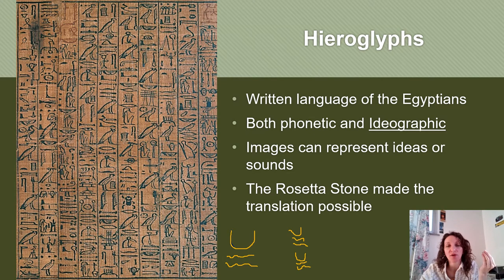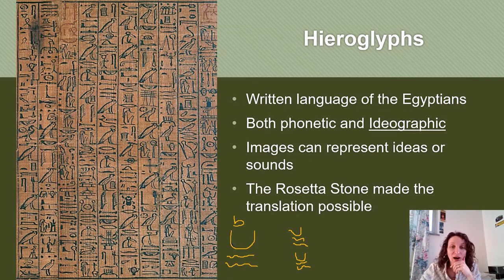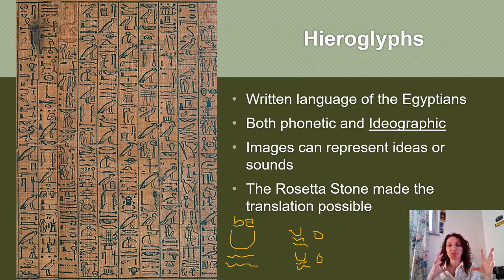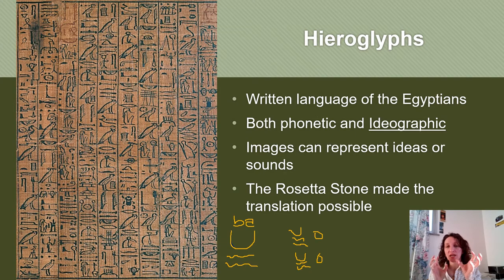A hieroglyphic that kept appearing was two of these boat symbols stacked on top of each other, and scholars didn't understand what it was — 'boat boat' didn't make any sense. The sound for this hieroglyph is 'ba,' so boat is 'ba,' and 'ba-ba' is father. You can see the relationship: an image represents an idea, a sound is associated with that image, and those sounds combine to form words. This is what made deciphering the language so very difficult.